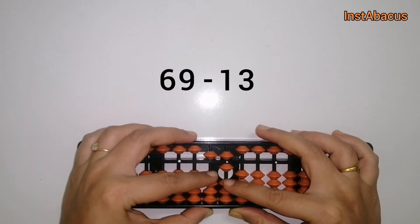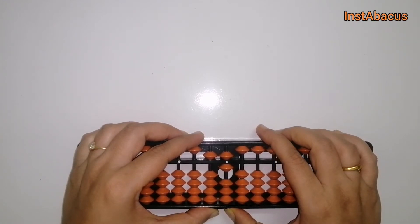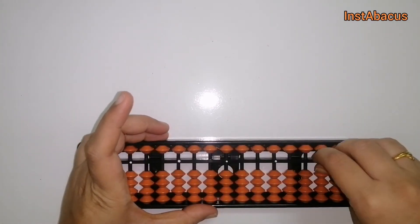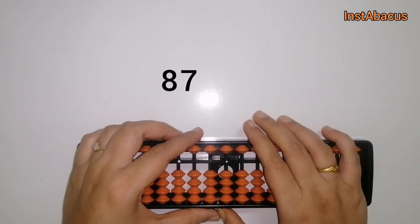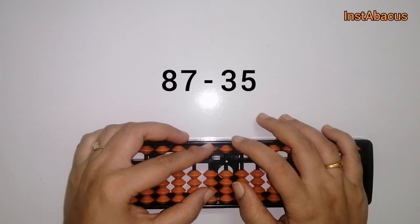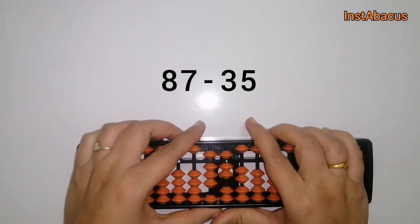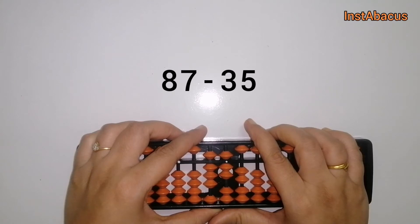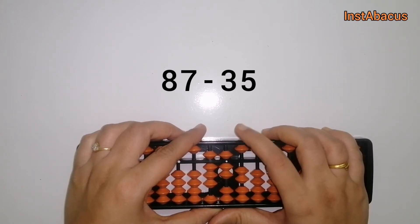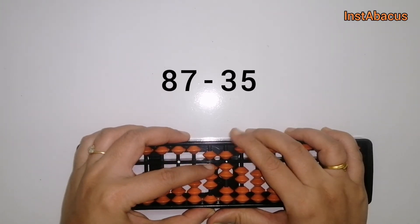Next one: 87 minus 35. So this is 87 on our abacus. And now we are going to subtract 35 from it. For that we are going to move these three earthly beads away from the answering bar and this one heavenly bead, five, away from the answering bar.